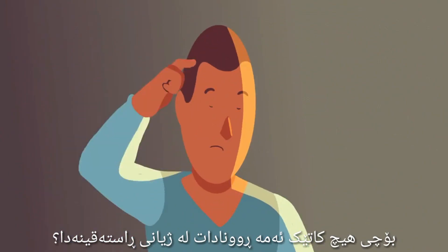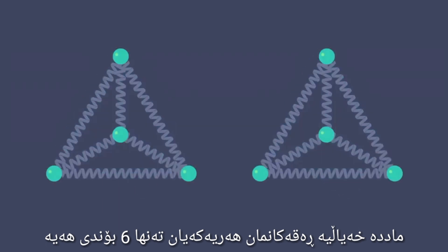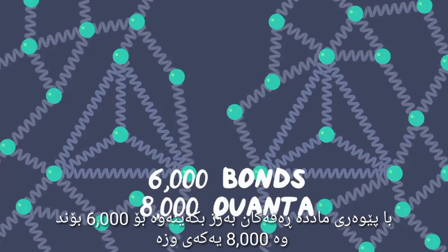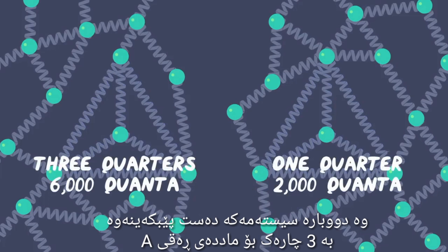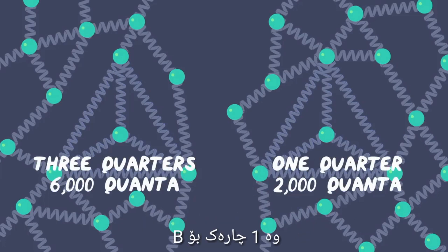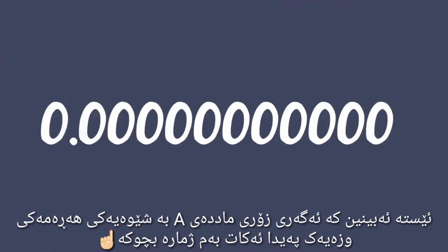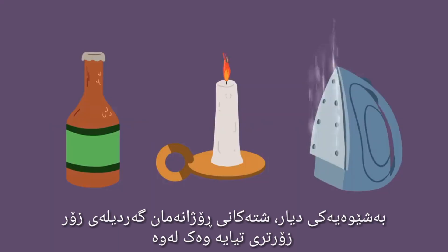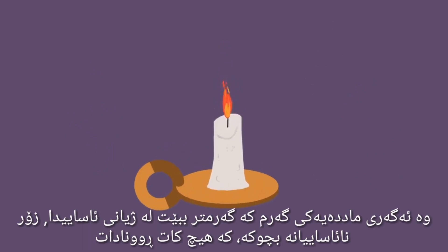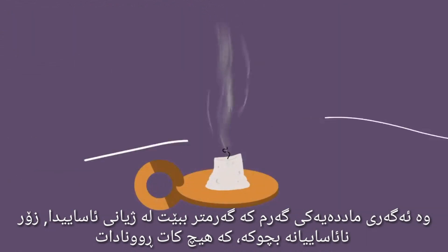But even in that example, there is an 8% chance that the hot object would get hotter. Why doesn't this ever happen in real life? It's all about the size of the system. Our hypothetical solids only had six bonds each. Let's scale the solids up to 6,000 bonds and 8,000 units of energy, and again start the system with three quarters of the energy in A and one quarter in B. Now we find that the chance of A spontaneously acquiring more energy is this tiny number. Familiar everyday objects have many, many times more particles than this. The chance of a hot object in the real world getting hotter is so absurdly small, it just never happens.